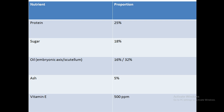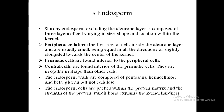The endosperm has three types of cells. The starchy endosperm, excluding the aleuron layer, is composed of three layers of cells varying in size, shape, and location. What you need to remember is that there are three layers: peripheral cells, prismatic cells, and central cells. Peripheral cells form the first row of cells inside the aleuron layer. Prismatic cells are present inside the peripheral cells, and central cells are present inside the prismatic cells.